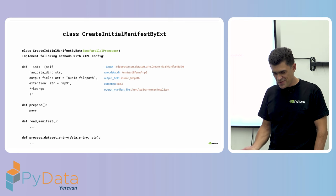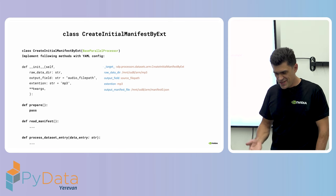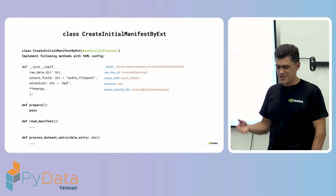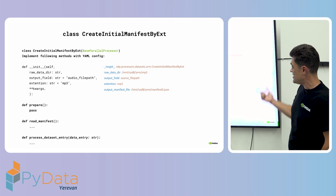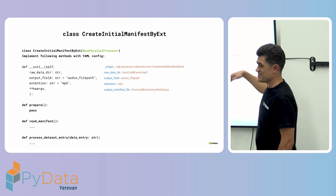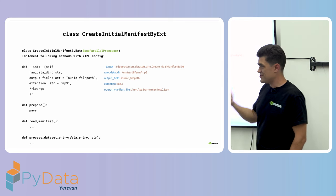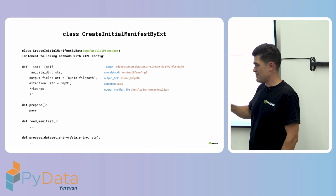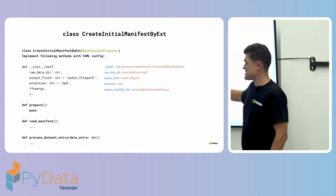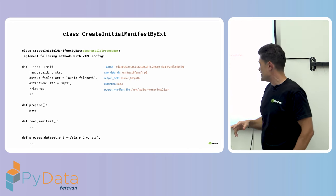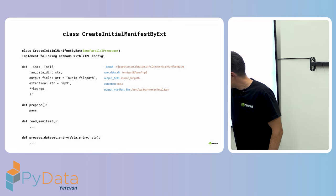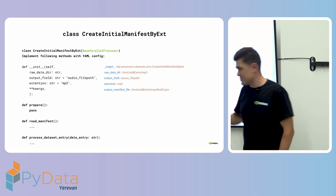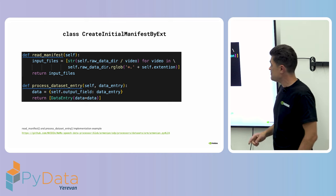We want to implement process_data_entry for CreateInitialManifestByExtension. We need to take a path to the folder where we'll find files with certain extensions — that's our raw data input. We also want an output field to save the source file path, and the extension we want to find. I'm going to skip the prepare function and define read_manifest and process_data_entry.